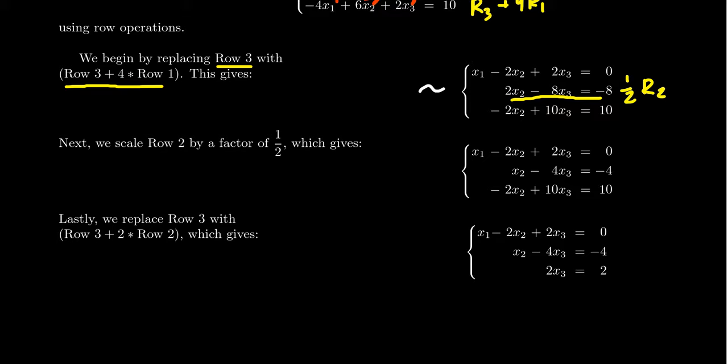And so, notice why I did this. Everything in this row is a multiple of 2. 2x2, 8x3, negative 8. If you times by 1 half or divide by 2, same thing. We can then replace it with this row right here. x2 minus 4x3 is equal to negative 4. We divided every coefficient by 2. That is what the scaling operation is all about. We had done the replacement operation up here.